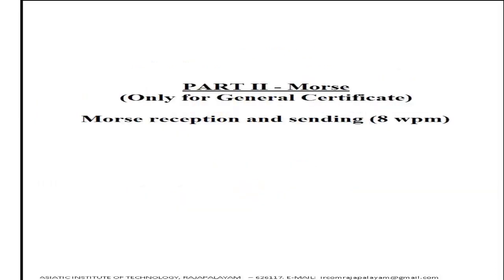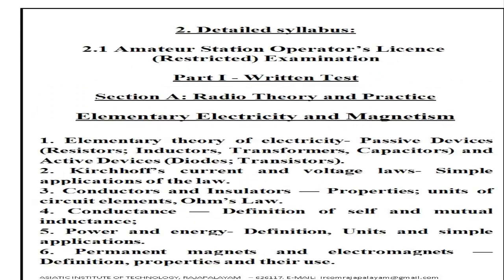Part 2: Morse Code - only for General Certificate. Morse reception and sending at 8 words per minute. Detailed Syllabus: Amateur Station Operator's License Restricted Examination, Part 1.